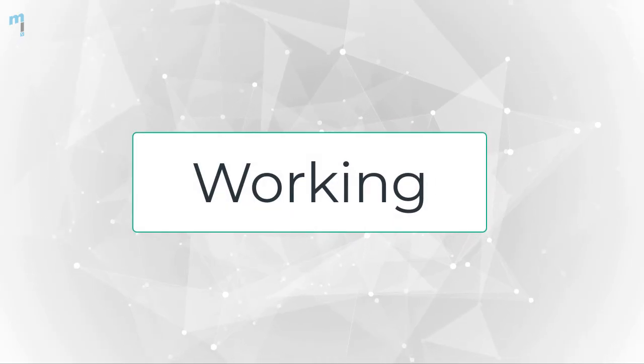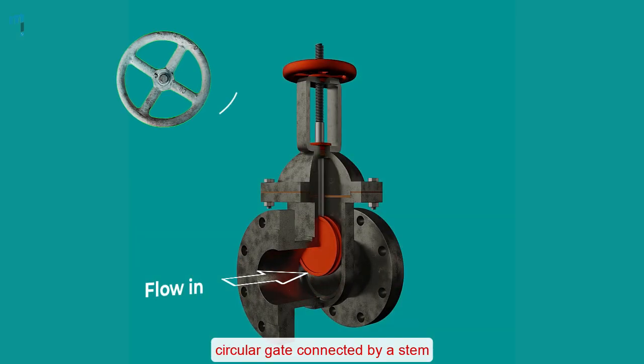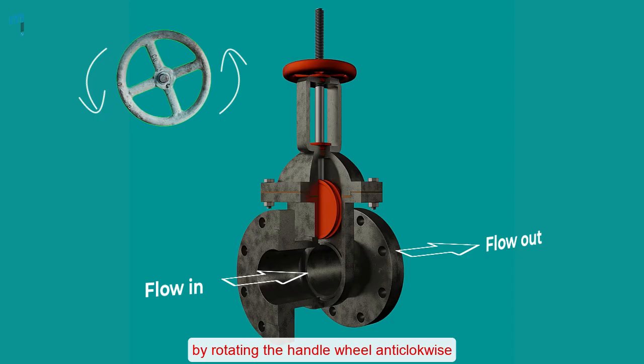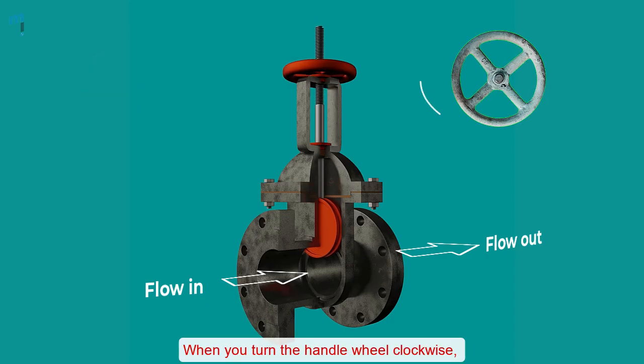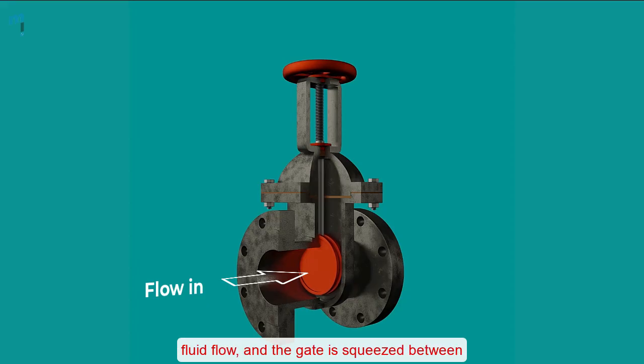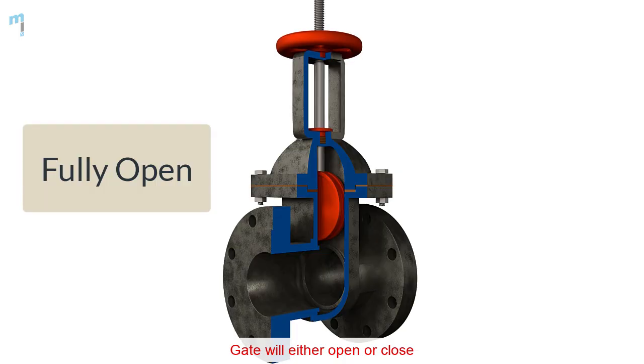Working of a gate valve: The gate valve works by lifting the circular gate connected by a stem out of the path of the fluid by rotating the handle wheel anticlockwise. When you turn the handle wheel clockwise, the stem moves downward across the fluid flow and the gate is squeezed between the two seats so that there is no fluid leakage when the valve is completely closed.